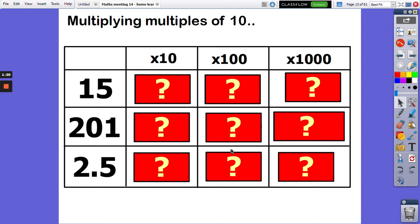Multiplying multiples of 10. Okay, we've got our numbers there: 15, 201, and 2.5. Multiply each of those numbers by 10, by 100, and then by 1000. Remember, you don't have to draw the grid out, just do the calculations. Okay, off we go.